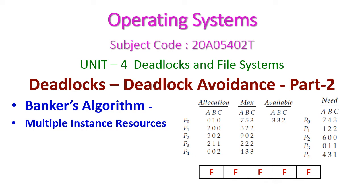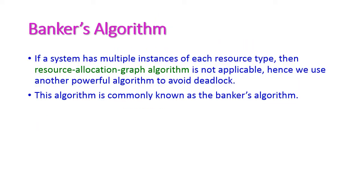Hello friends, welcome to this operating system class. Now we will see the second part of deadlock avoidance algorithm from the fourth unit. If resource instances are multiple, then we can use the Banker's algorithm to avoid deadlock. If a system has multiple instances of each resource type, then the resource allocation graph is not applicable. Hence we have to use another powerful algorithm to avoid deadlock, known as Banker's algorithm.